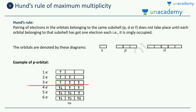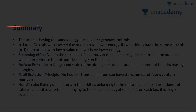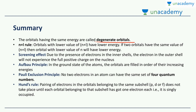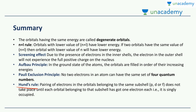This is what Hund's rule states. To summarize what we learned: degenerate orbitals are orbitals with the same energy. We studied the n plus l rule, the Aufbau diagram for filling order, the Pauli exclusion principle, and Hund's rule. We also studied the screening effect.